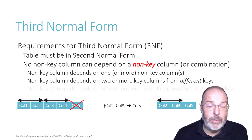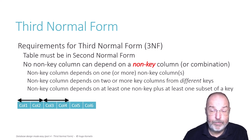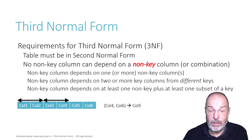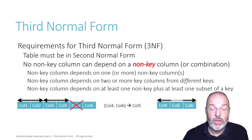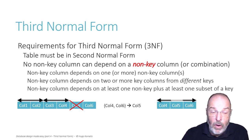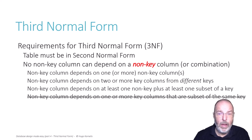There is also the case where a non-key column depends on a combination of at least one non-key column plus at least one subset of a key. With a table of six columns, if the combination of column 4 and column 6 determines column 5, this combination is not a key — it includes one column that's part of a key and one that is not. But it still determines a non-key column, which violates third normal form. The correct solution is again to create a new table and remove column 5. The only situation you do not need to check is whether a non-key column depends on one or more key columns that are all a subset of the same key — because that would already be a violation of second normal form, which we already checked.